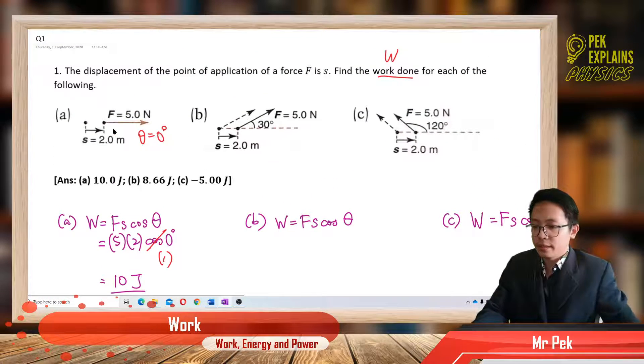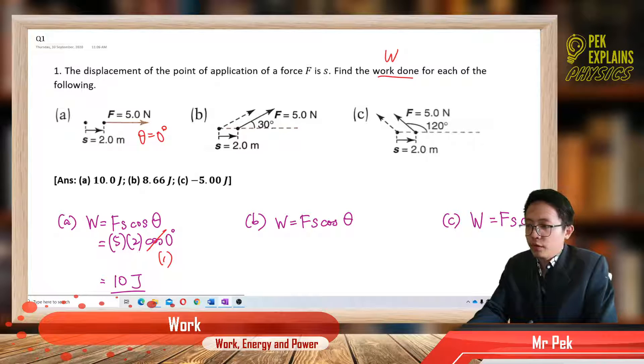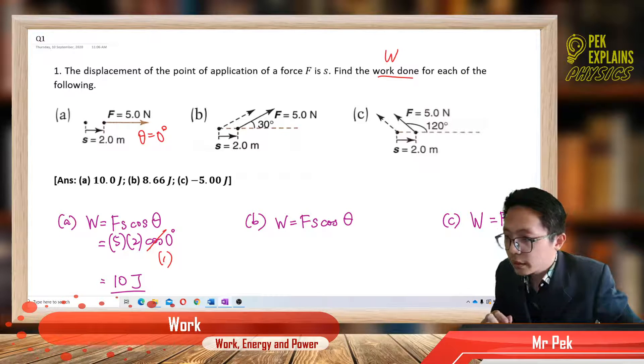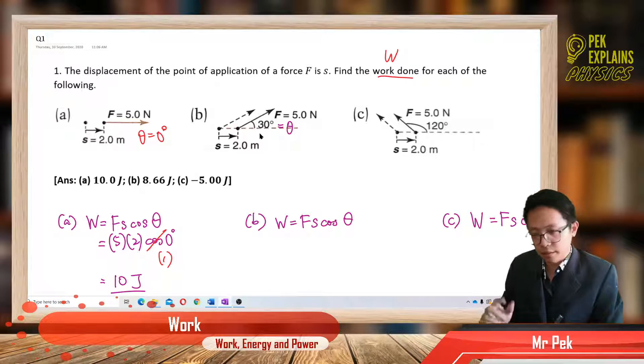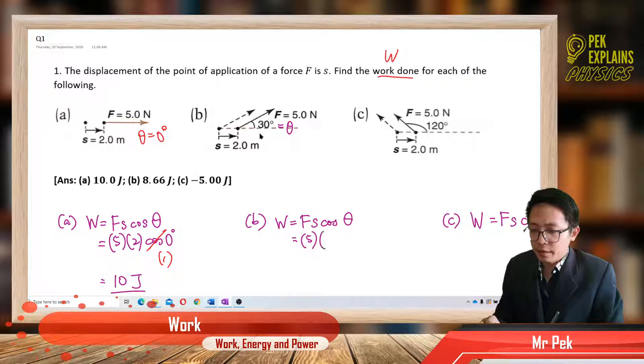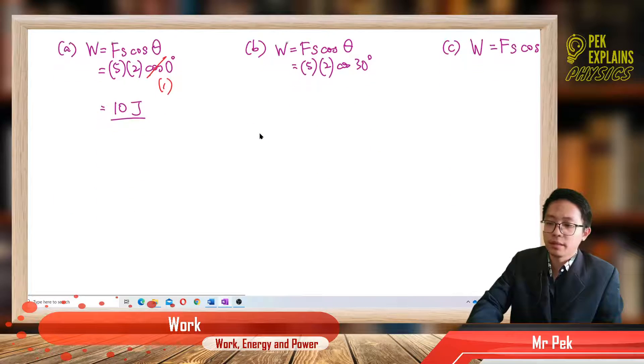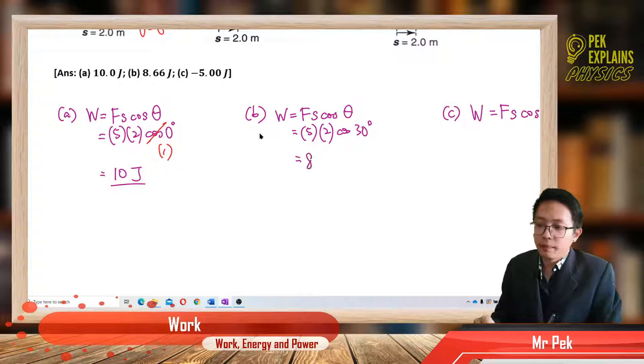For the second one, the angle between force and displacement is 30 degree. So just 5 times 2 meter cos 30 degree. We get 8.66 J. That's our work done.